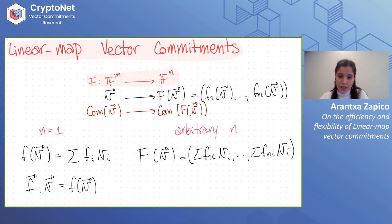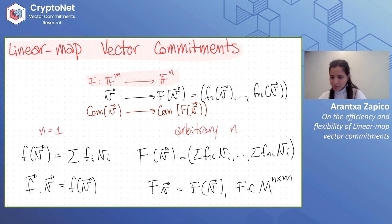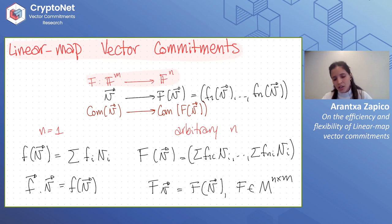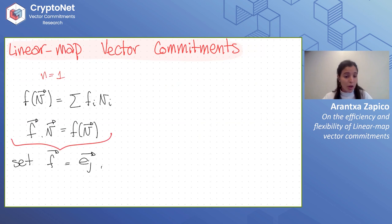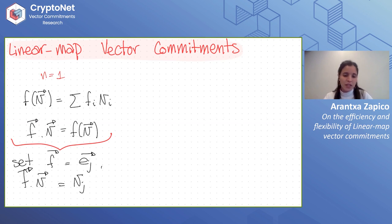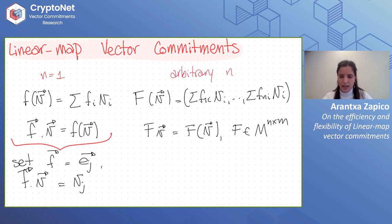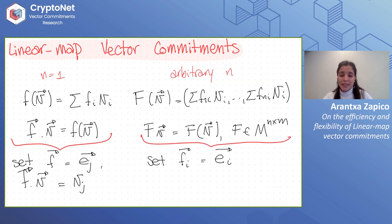For arbitrary N, instead of an inner product we perform a matrix-vector product, where the matrix rows are the independent functions corresponding to each output element. The case N equals 1 captures individual openings: set F to the canonical vector J, and evaluating in B gives position J. For subset openings, we move to larger N — the size of the subset — and open each position in the subset independently to get the subset opening as a vector.